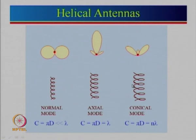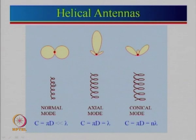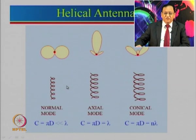Now let us look at the helical antenna. Helical antennas are made by bending a wire around a dielectric rod, which can be hollow or solid, or with some support structure. There are three different modes in which a helical antenna can operate: normal mode, axial mode, and conical mode. The same helical antenna can work in either mode depending upon the frequency of operation. For normal mode, the circumference pi×d is much less than lambda, so it radiates normal to the helical axis — that is why it is called normal mode.